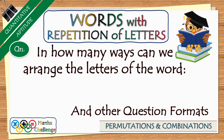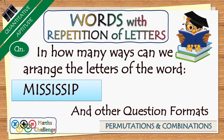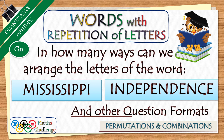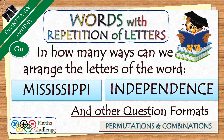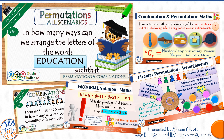Hi everyone, welcome to IPM Leap. Today we are going to discuss words which have repetition of letters in permutations and combinations. We are often asked to calculate the number of ways in which such words can be arranged. There could be several question formats related to arrangements of letters belonging to such words. We are going to take the example word Mississippi for today's lesson. Once you have understood this concept, you may practice some more questions on the other word Independence.